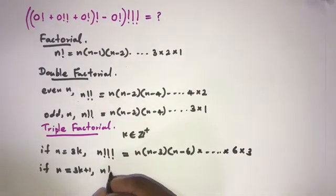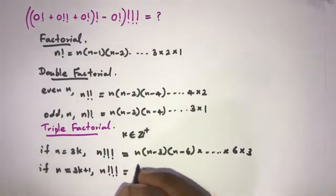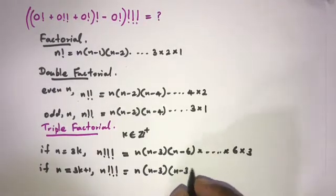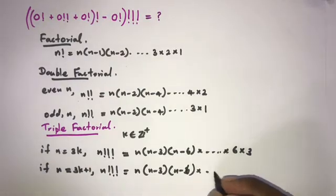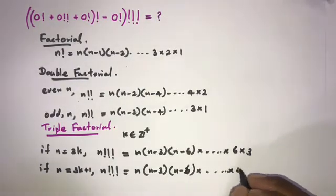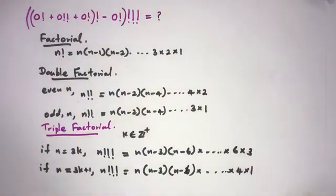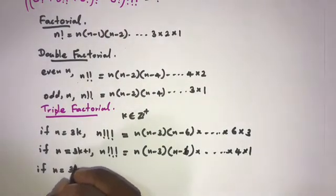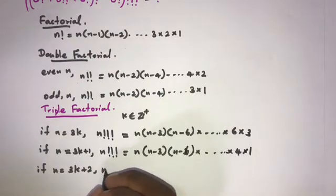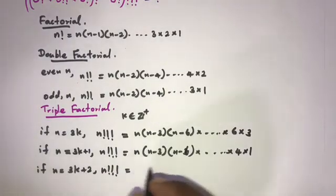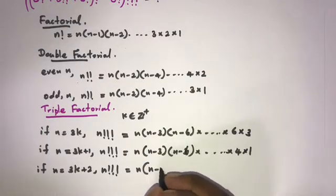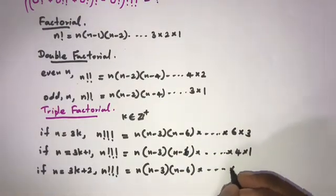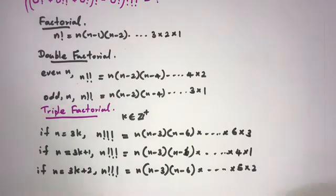If n is equal to 3k plus 1, then n triple factorial equals n times (n minus 3) times (n minus 6) and so on down to 4 times 1. If n is equal to 3k plus 2, then n triple factorial equals n times (n minus 3) times (n minus 6) and so on down to 5 times 2.